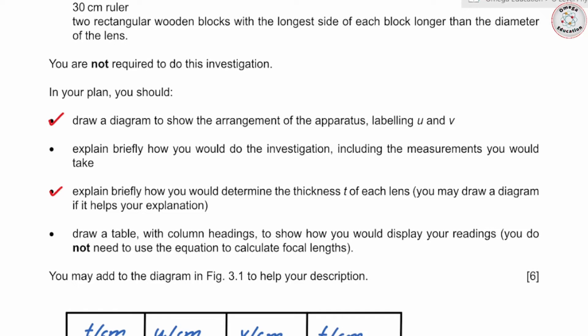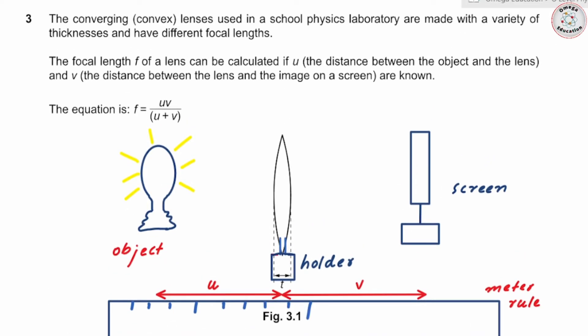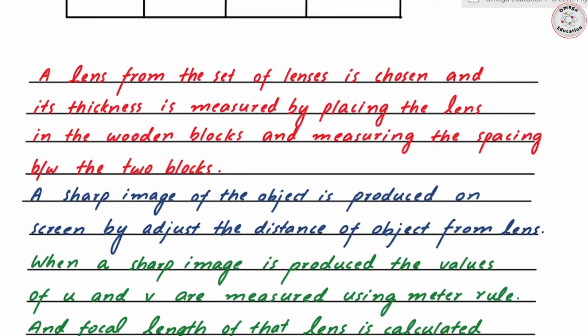Now for the investigation procedure: thickness can be found from the ruler using the wooden blocks method. To find the focal length, we need the values of u and v first. Take the thinnest lens first; measure its thickness by placing it between the wooden blocks and measuring the spacing. Then set up the apparatus and move the object forward or backward until a sharp image of the object is produced on the screen.